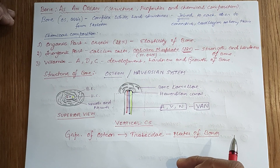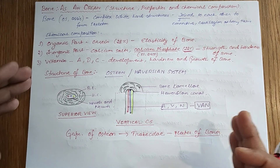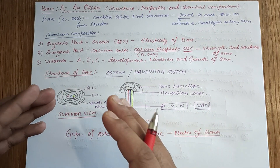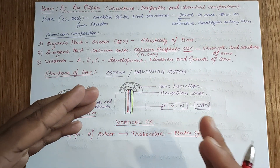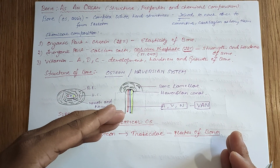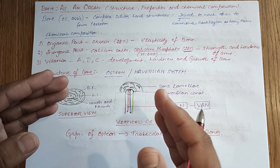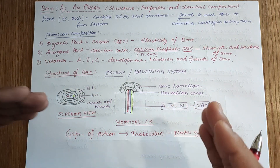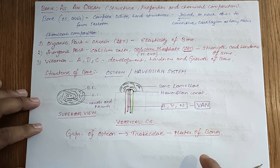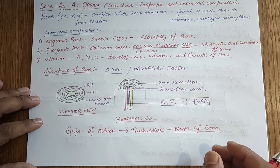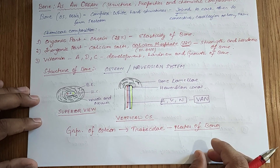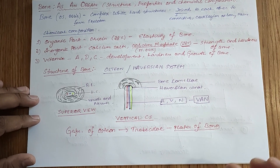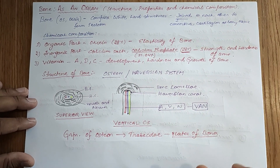In the next video I will be telling about the different types of bone substances, what is bone marrow, and what is periosteum. Thank you for watching this video and stay tuned for the next one.